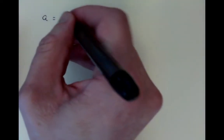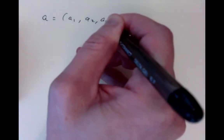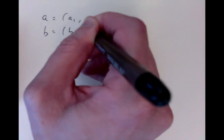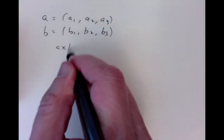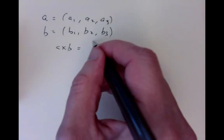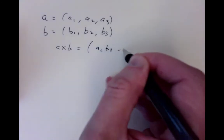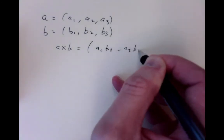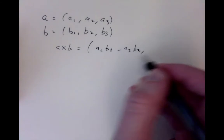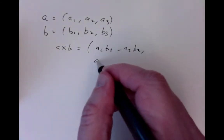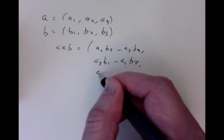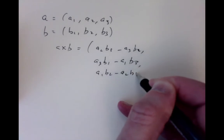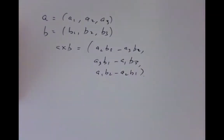The cross product of two vectors is going to be a vector. If we write vector A as (A1, A2, A3) and B as (B1, B2, B3), then the cross product A×B is given by the formula (A2·B3 − A3·B2, A3·B1 − A1·B3, A1·B2 − A2·B1). It's a mess — not easy to remember.